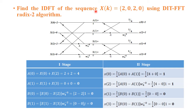Problem statement: Find the IDFT of the sequence X(k) = {2, 0, 2, 0} using the Radix-2 DIT FFT algorithm. The input is in the frequency domain and we need to convert it to time domain. Using the first-stage formulae with X(0), X(1), X(2), X(3) given, we calculate the first stage outputs: A(0) = 4, A(1) = 0, B(0) = 0, B(1) = 0.